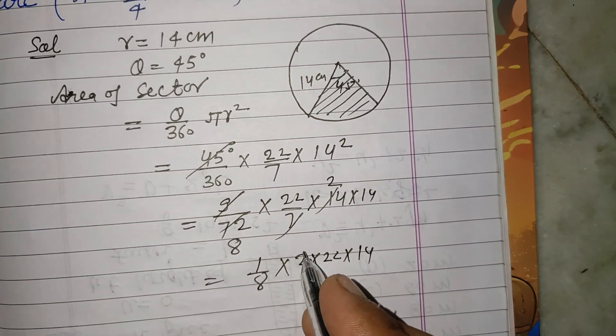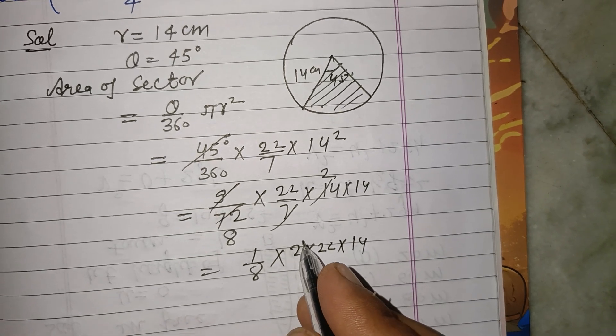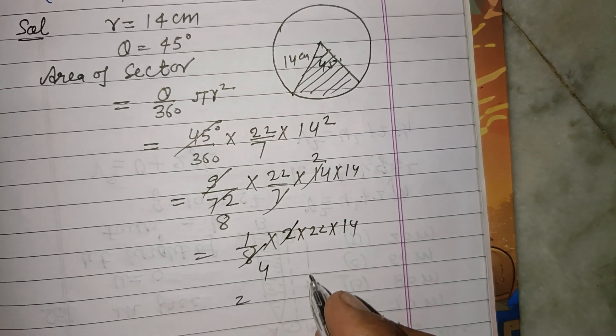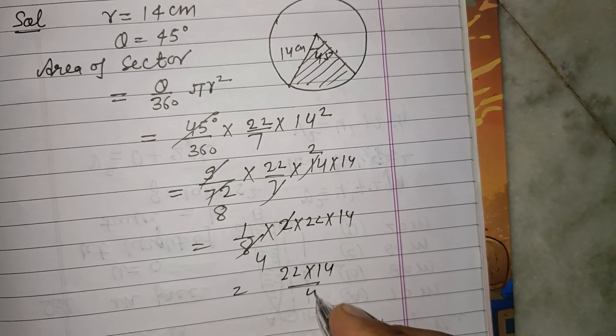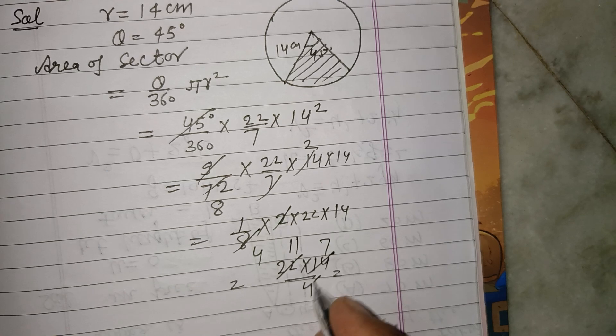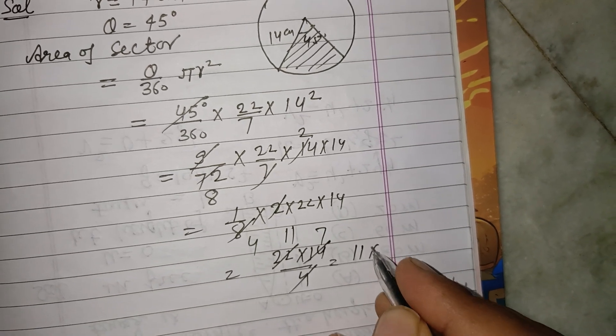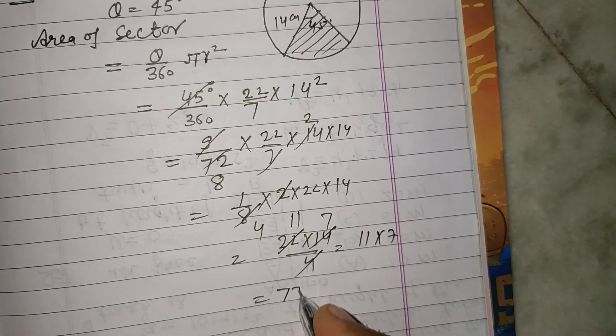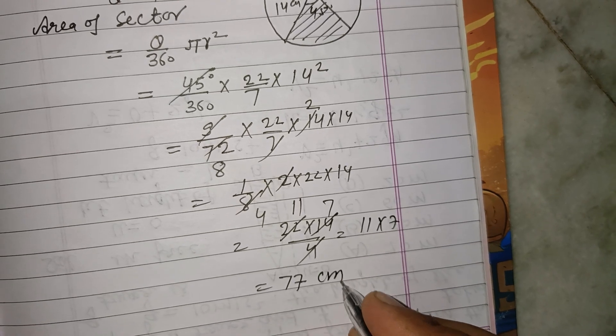Dividing this 2 for 8 and 22 into 14 upon 4, we divide this by 11 and this by 7, so 11 into 7, that is 77 square centimeter.